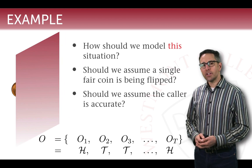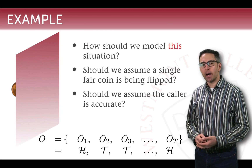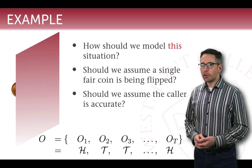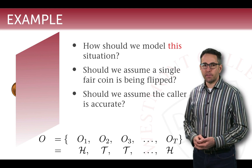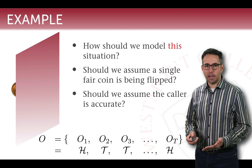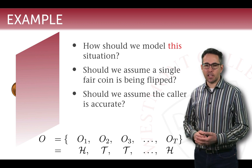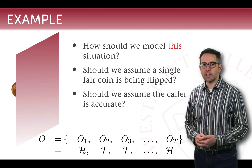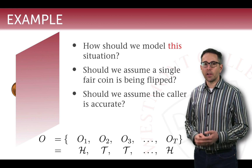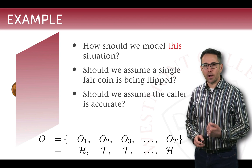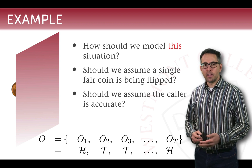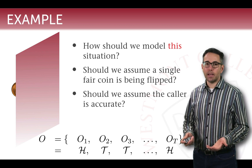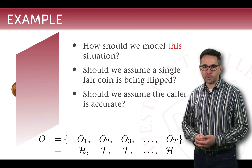A good question is: how do we model this situation? Do we know for sure that the coin on the other side is a fair coin — meaning it comes up heads or tails equally? And can we assume that the caller is faithfully reporting what they observe? These are additional layers of ambiguity introduced by not being able to directly observe the coin or its results.